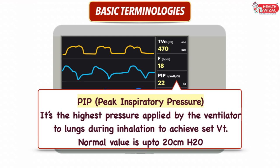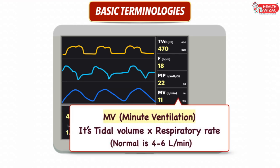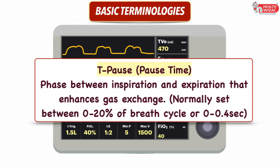PIP is the highest pressure applied by the ventilator to the lungs during inhalation to achieve the set tidal volume. Its normal value should be up to 20 cm of water. Raised inspiratory pressure also indicates airway obstruction or obstruction of the ventilatory circuit, which may be due to a mucus plug or a conscious patient biting the endotracheal tube. Next is MV, or minute ventilation, which is the product of tidal volume and respiratory rate, normally between 4–6 liters per minute. Next is T pause, or pause time — the phase between inspiration and expiration that enhances gas exchange, usually set between 0–20% of the breath cycle or 0–0.4 seconds.